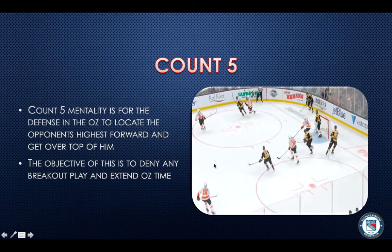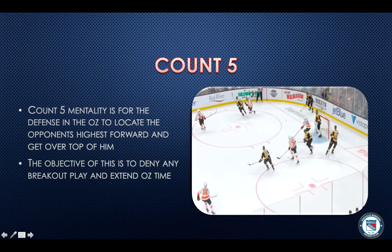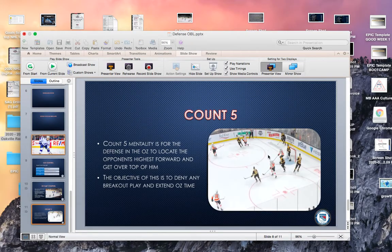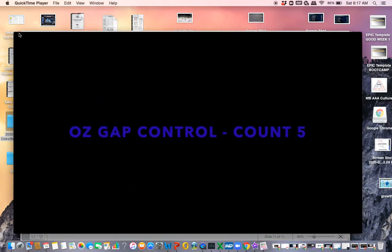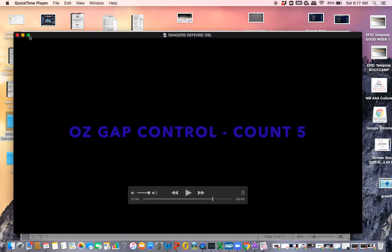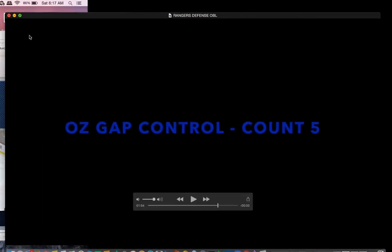You can see in this diagram: this is Boston's highest forward. The Philly defenseman realizes it and he's going to get nice and tight to him and close his gap. So when this guy does get the puck, he has nowhere to go and nowhere to create a play. We're just going to watch a few videos based on this count to five mentality and setting a gap in the offensive zone.